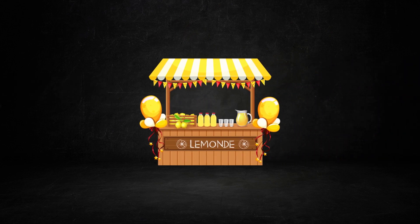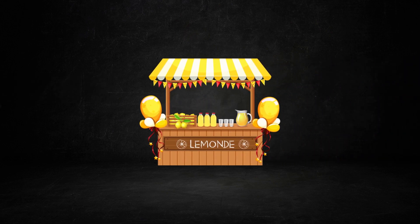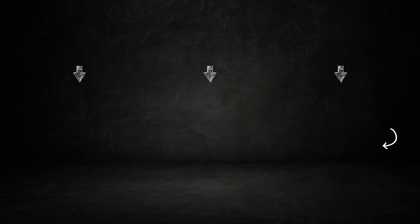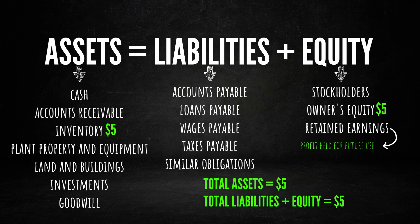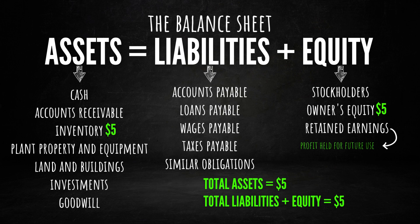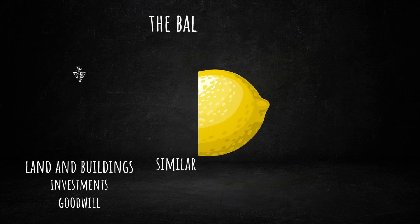Imagine I visit a shop and spend $5 on lemons, converting my cash into inventory. Although the categories have changed, the total assets remain the same, ensuring that my balance sheet remains balanced.